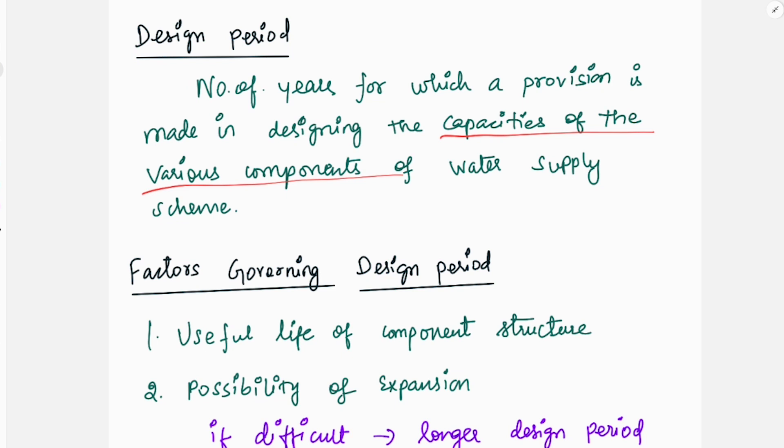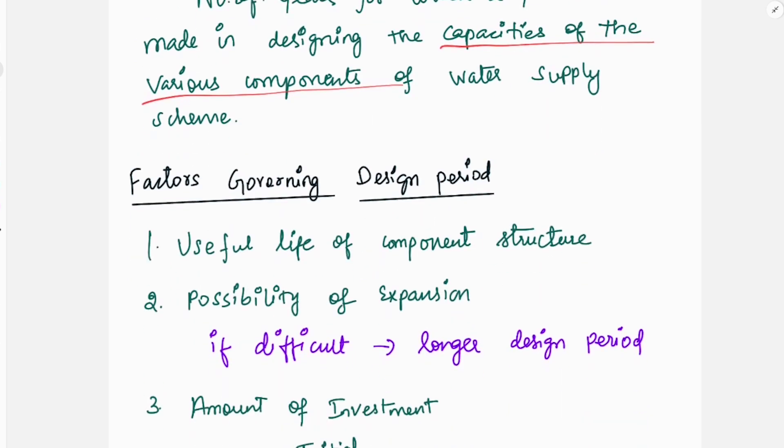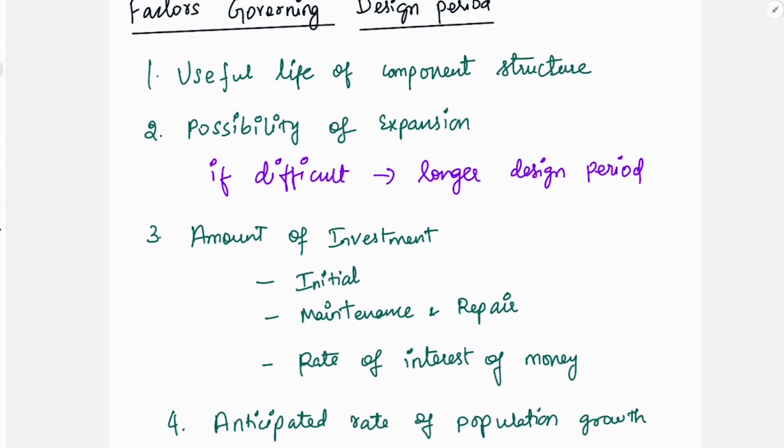Filtration, treatment plant, power mains, distribution system. If you look at all of these, we will talk about the storage tanks. We will talk about the design period based on the utility, the cost efficiency. So, we will talk about the factors governing design period.